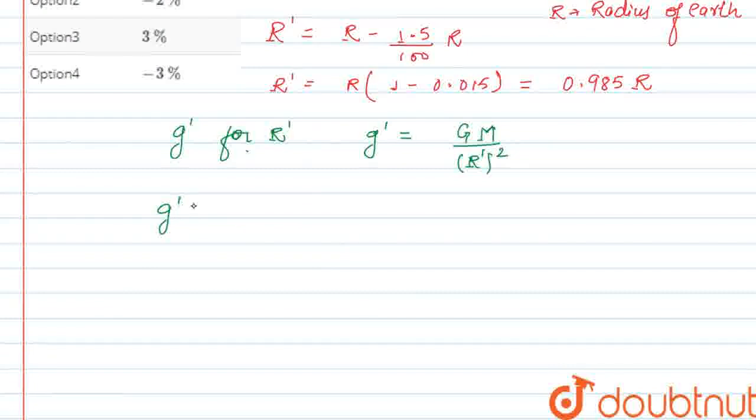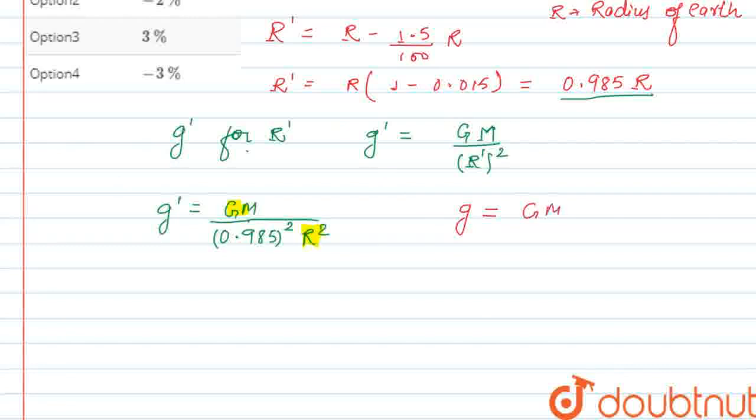Now, g prime equal to G M and putting the value of R prime we have calculated, that is 0.985 whole square into R square. So here we can observe that G M upon R square is also there and the general formula of acceleration due to gravity is g equal to G M upon R square. So we can replace this by g.